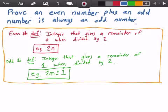So for example, 2n, where n is some arbitrary integer value, this would give us a remainder of zero when it is divided by two.